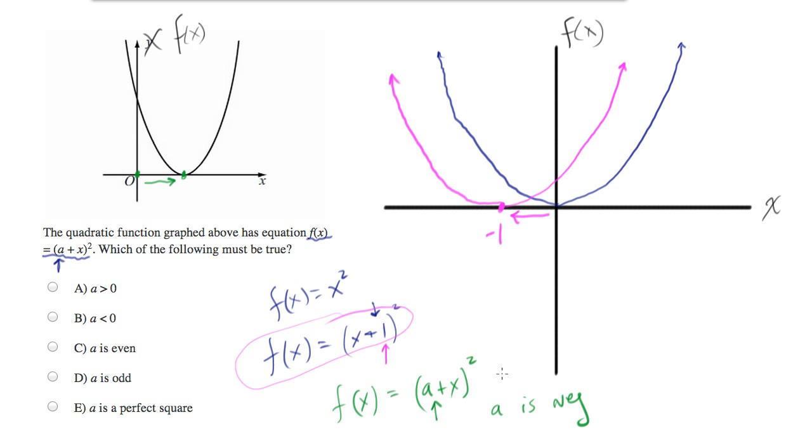Because only if a were something such as negative 1 would we move the chart to the right. There's only one answer on here which says a is negative, and that'll be the right answer.